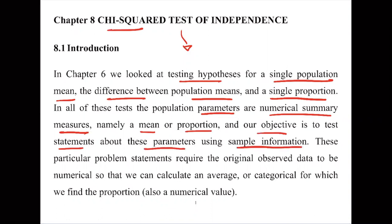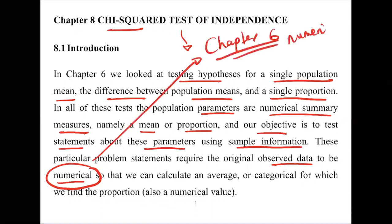These problem statements required the original observed data to be numerical, so in Chapter 6 we were dealing with numerical parameters. We could calculate averages and, of course, proportions for categorical variables as well — for example, the proportion of people using a certain product.